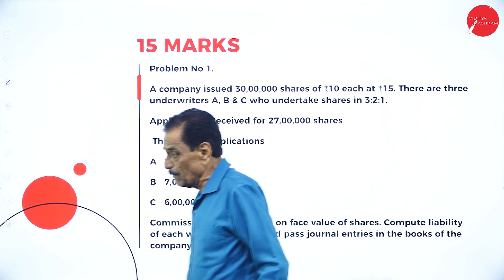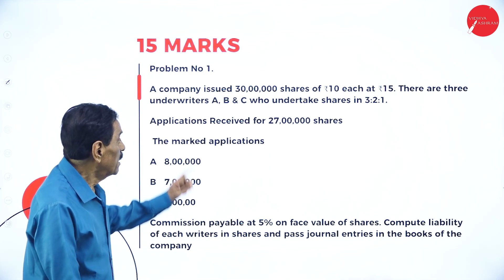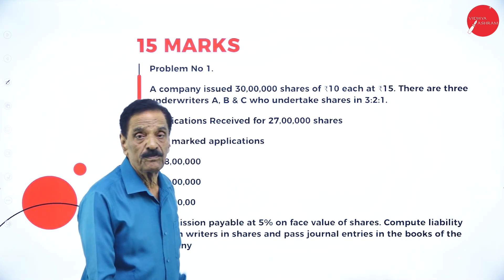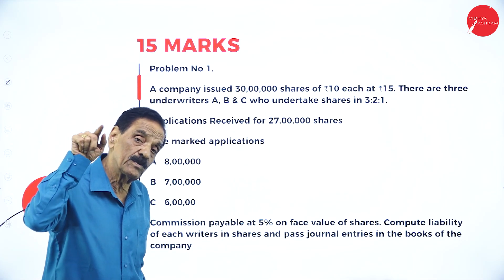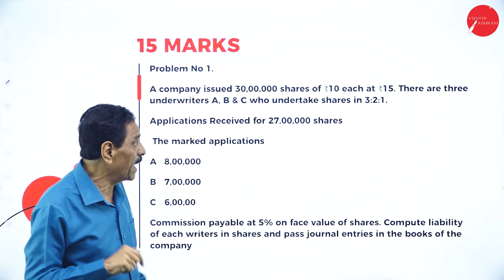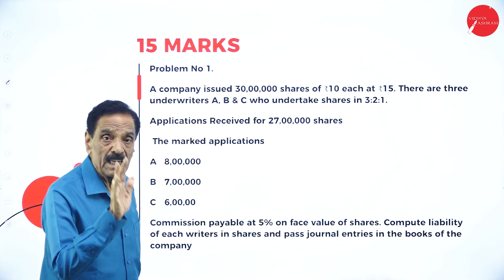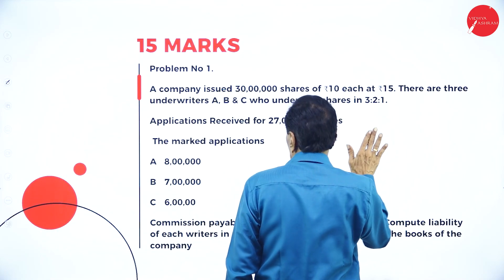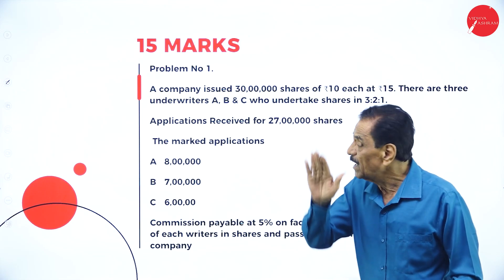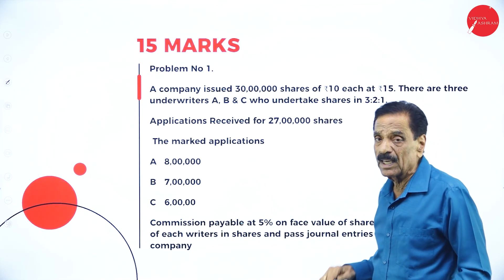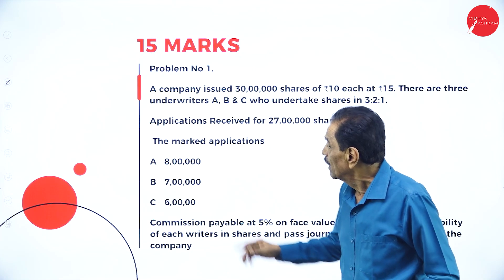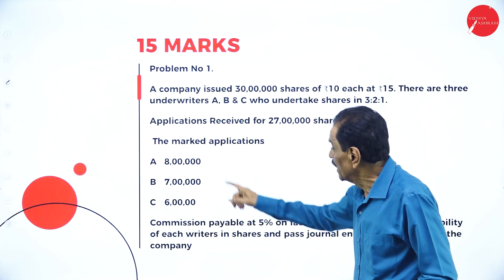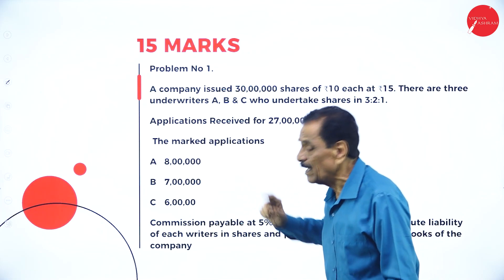Now we move to Problem 1, a 15-mark question. A company issued 30 lakh shares of rupees 10 each at rupees 15 — so face value is ₹10, issued at a premium of ₹5. There are three underwriters A, B, and C who undertake shares in the ratio 3:2:1. Applications were received for 27 lakh shares and the marked applications are 8 lakh for A, 7 lakh for B, and 6 lakh for C.